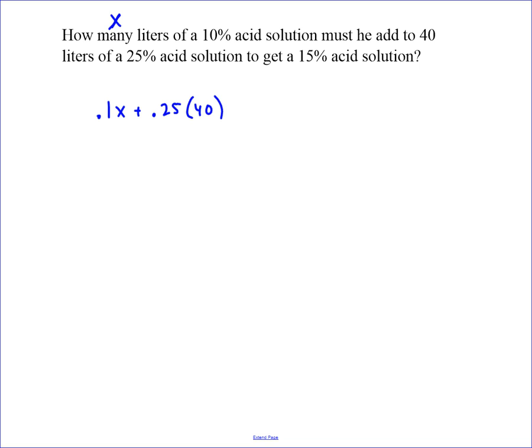And then that is one way to describe this future solution that we're going to have. The other way is to say, well, we know that it's going to turn out to be a 15% solution, so we're going to multiply 0.15 times how much is in this future solution. Well, the amount that's in the future solution is the 40 liters that we started with plus x, what we added to it.